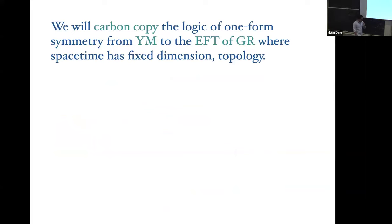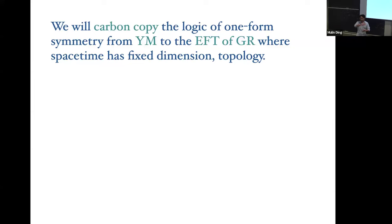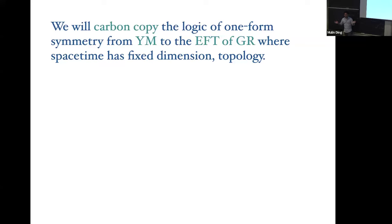If spacetime itself has changes in topology — like handles popping out of existence — that becomes confusing. So here we'll assume a weak field expansion of general relativity, with a fixed background of fixed dimension and topology, and gravitons propagating about it: the usual EFT of gravitons including non-linearities. This is an effective field theory like any other EFT, like chiral perturbation theory — of course not renormalizable, so we can't extrapolate to arbitrarily high energies.